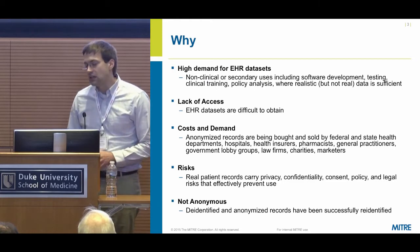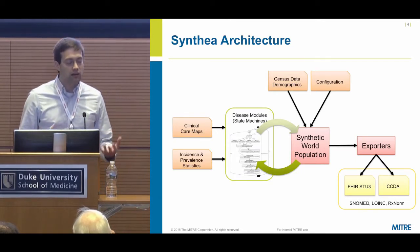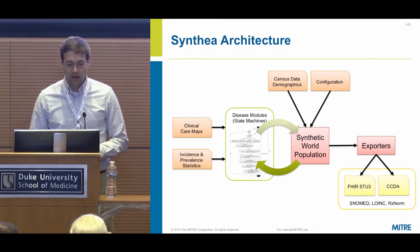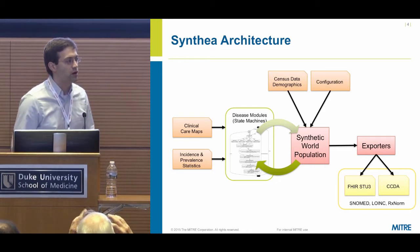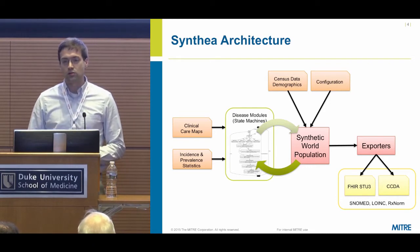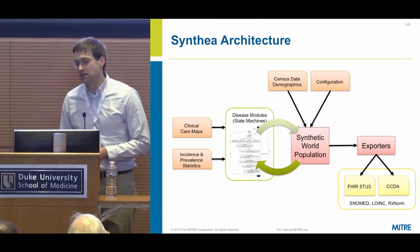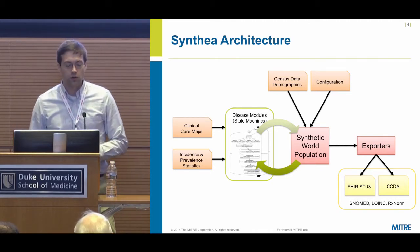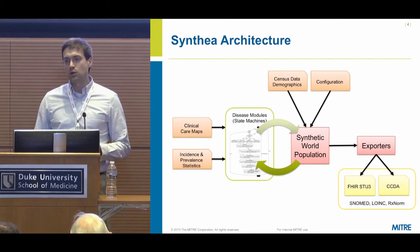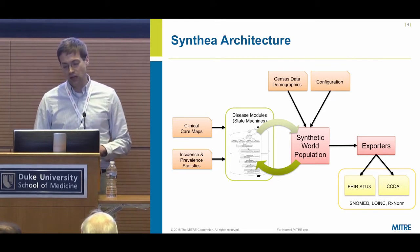I'll take a step back and talk about the CYNTHIA architecture. Starting on the left, the inputs include clinical care maps published in journals or provided by medical specialty societies, combined with incidence and prevalence statistics primarily from the CDC. In the center, we create state machines — we call them disease modules. They have different types of states, like a condition state, and different types of transitions: probabilistic transitions and rule-based transitions. For example, if you're a smoker, you might have a higher percentage chance of a comorbidity. At the top, we take in census data demographics.